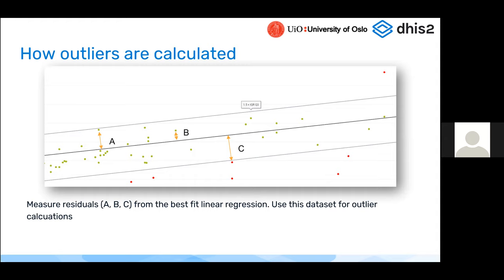When we do outlier detection on a scatter plot, DHIS2 draws a linear best-fit line among all the facilities and points. Then we measure the distance between the best-fit line and each point — each facility — giving us a value associated with each point representing how far it is from the mean or median. That dataset is then used to perform the outlier analysis. We have three approaches: interquartile range, modified Z-score, and standard Z-score.